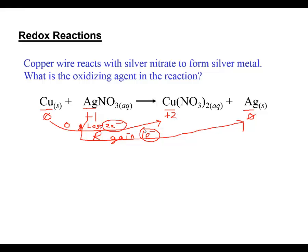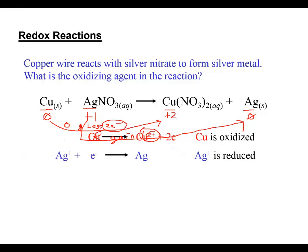I'm going to write the two half reactions, ignoring nitrate because it's identical on both sides and not changing its oxidation number - I just need to focus on the copper and the silver. The copper oxidation half reaction shows copper forming the copper two cation, plus two free electrons.